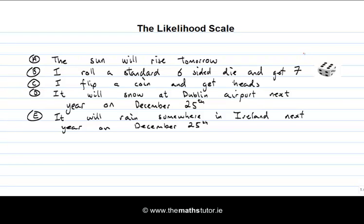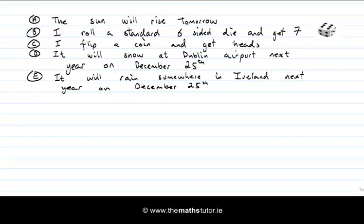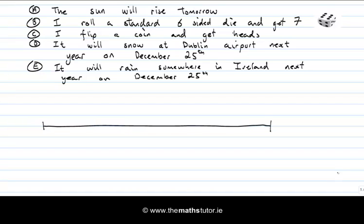We've gone through these five events and assigned verbal descriptions of likelihood to each of them. We can think of these likelihood descriptions as being laid out along a scale. At one end of the scale we put impossible, and at the other end we put certain. In the middle of the scale we put evens — events that are as likely as they are unlikely. Let's see where events A, B, C, D, and E lie on the scale.